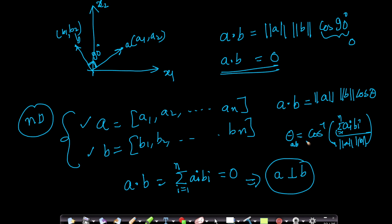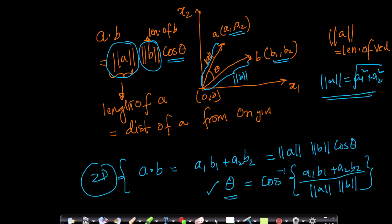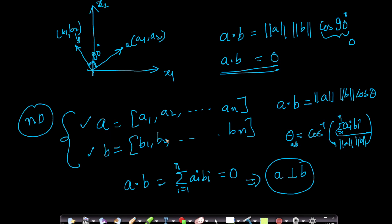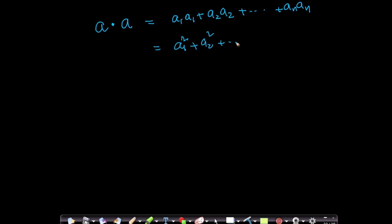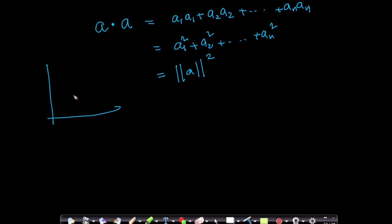Linear algebra and coordinate geometry are very nicely connected. Whatever we learn in 2D we can easily extend to n dimensions, because vectors can be of 2D, 3D, or any dimension, and the geometric intuition transfers. Now, what about a dot a — the dot product of a vector with itself? It equals a1² + a2² + ... + an².